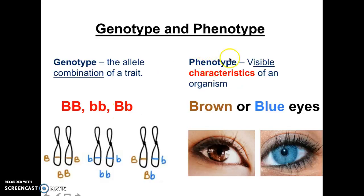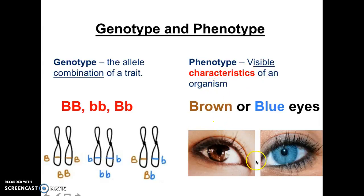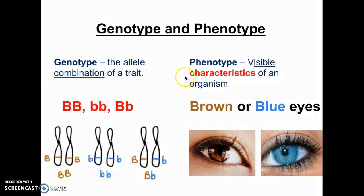Phenotype, on the other hand, is going to represent the visual characteristics — the actual visible, physical characteristics that the organism has. So, for example, brown eyes or blue eyes. Know the difference between those two: genotype is the actual gene combination, and phenotype is what you can physically observe.